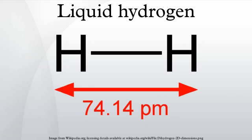Room temperature hydrogen consists mostly of the orthohydrogen form. After production, liquid hydrogen is in a metastable state and must be converted into the parahydrogen isomer form to avoid the exothermic reaction that occurs when it changes at low temperatures. This is usually performed using a catalyst like iron oxide, activated carbon, platinized asbestos, rare earth metals, uranium compounds, chromium oxide, or some nickel compounds.